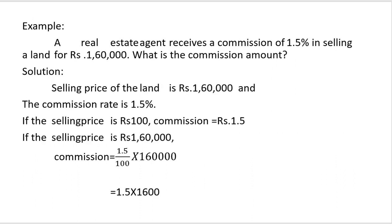Now let's see one example related to commission. A real estate agent receives a commission of 1.5 percent on selling a land. The land price is 1,60,000 rupees. We have to find the commission amount. The selling price of the land is 1,60,000 and the commission rate is 1.5 percent.